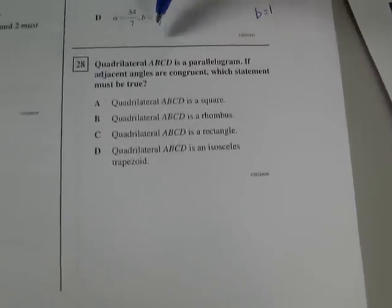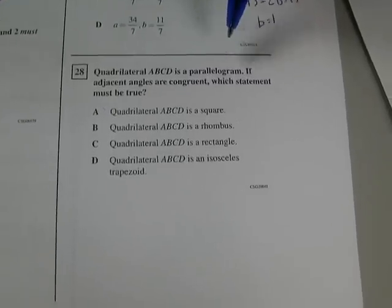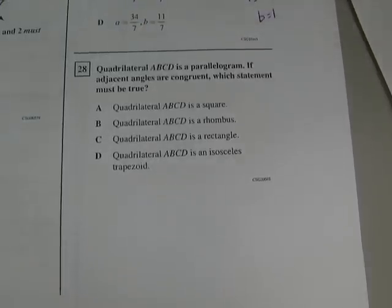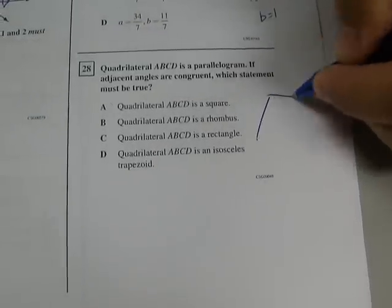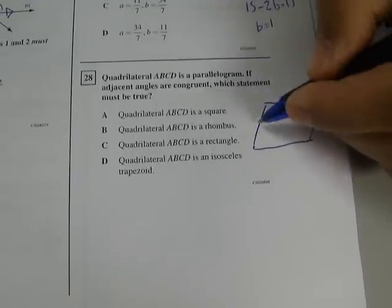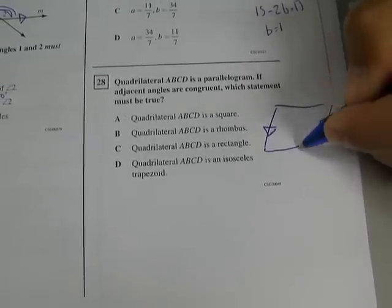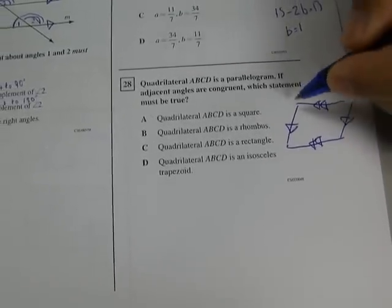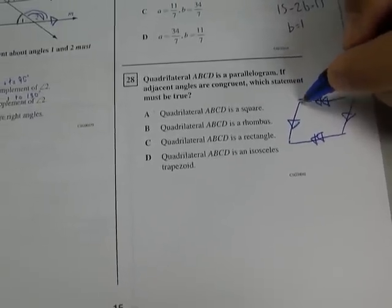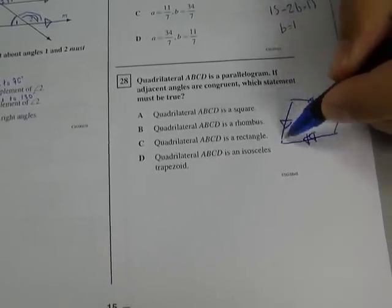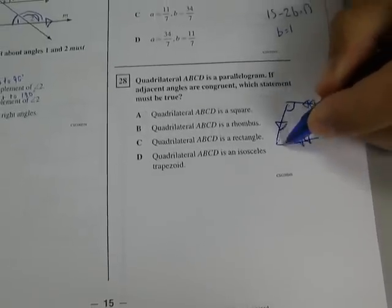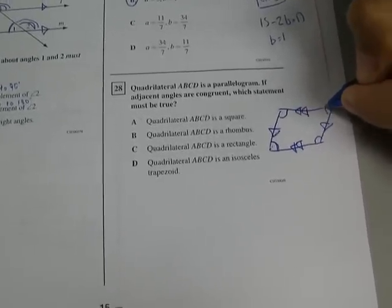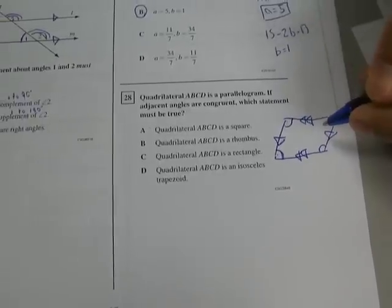Number 28. Quadrilateral ABCD is a parallelogram. If adjacent angles are congruent, which of the statements must be true? So let's think about this. It's a parallelogram. So parallelograms, this has to be parallel, this has to be parallel. And then it says adjacent angles are congruent. So that means this angle has to be congruent to this angle. So if this angle is congruent to this angle, and this angle is congruent to this angle, and this angle is congruent to this angle, then they're all congruent.